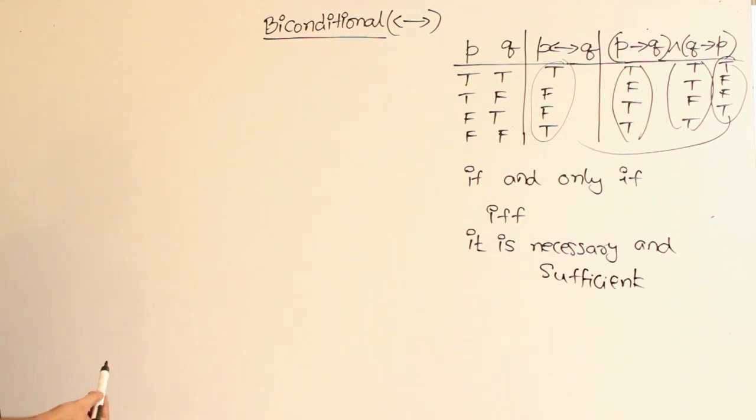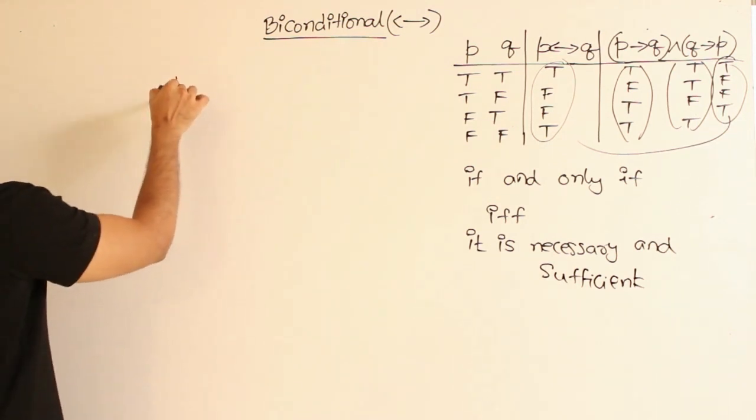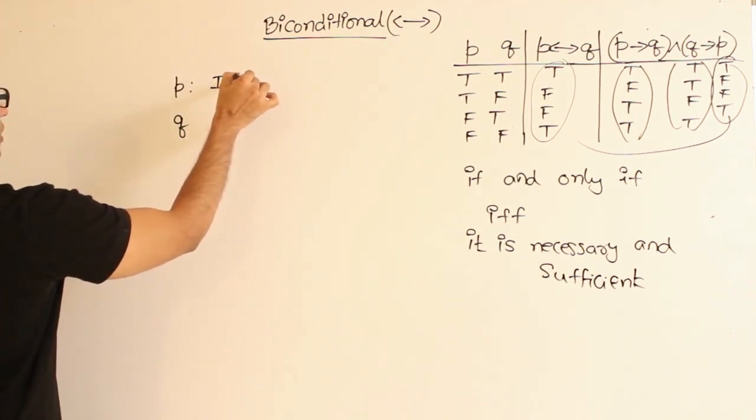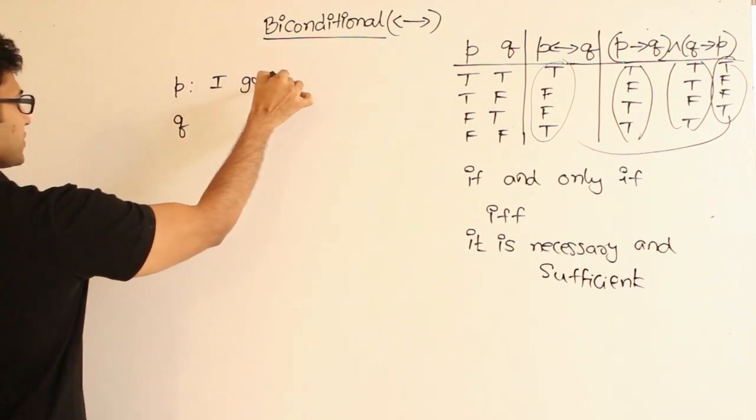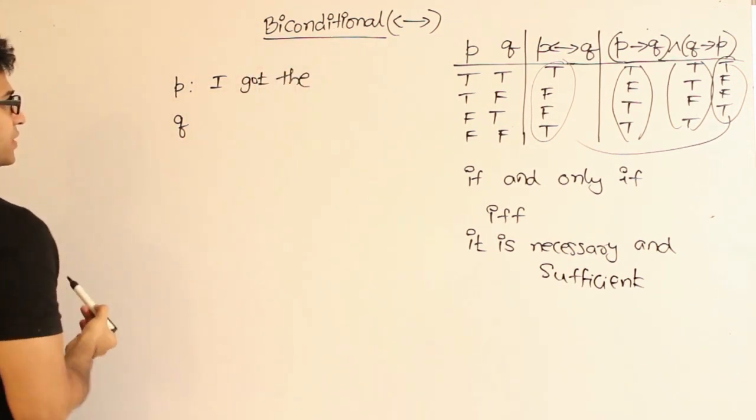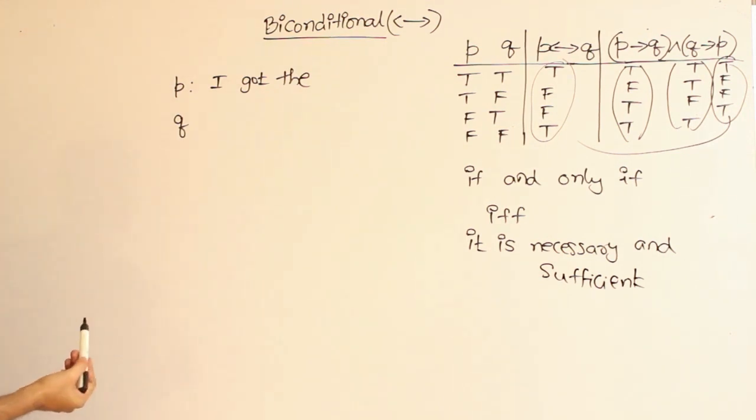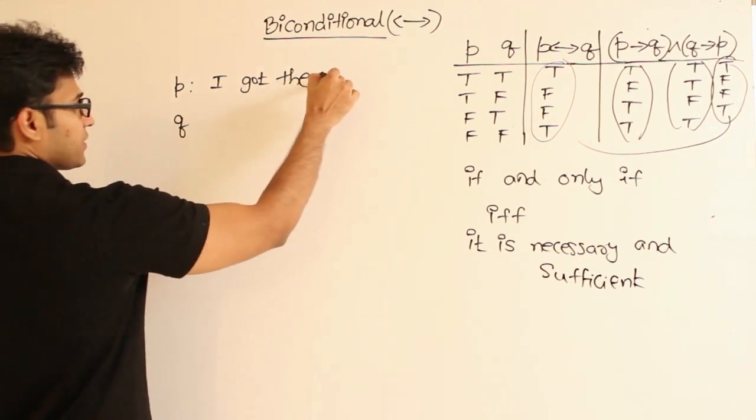Let us say we have two statements P and Q. P is I got the tickets. And don't worry about the tense here - here I am using past tense, and when I convert it to the biconditional or conditional statements I will try to change the tense, but the actual meaning it refers is going to be same, right? I got the ticket.